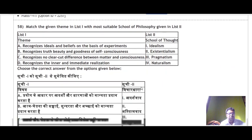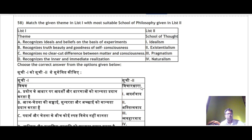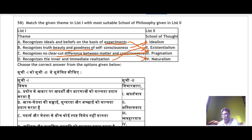Question 58 asks to match List 1 with List 2 on philosophies. 'Recognizes ideals and beliefs on the basis of experiments' — this is pragmatism. 'Recognizes truth, beauty and goodness' — this is idealism. 'No clear-cut difference between matter and consciousness' — this is naturalism. 'Recognizes the inner and immediate realization' — this is existentialism. So the correct matching is A-2, B-1, C-3, D-2 and the correct answer is option number 2.